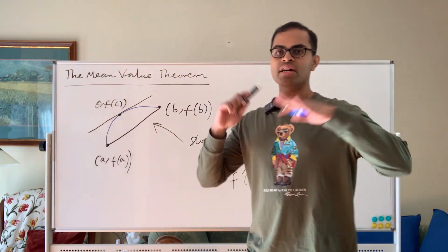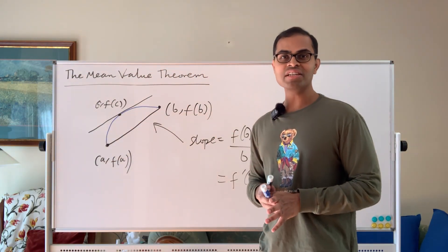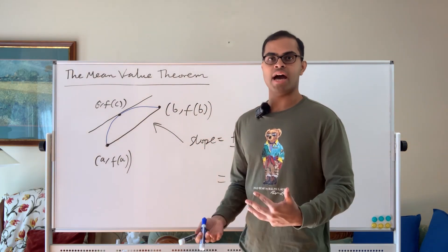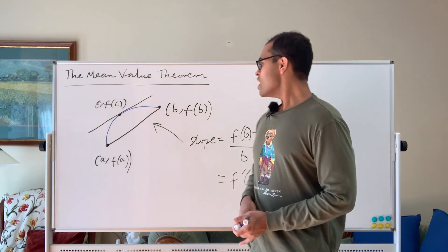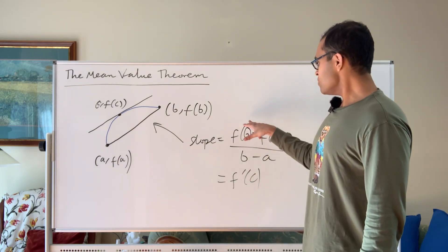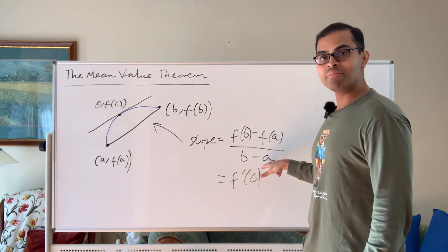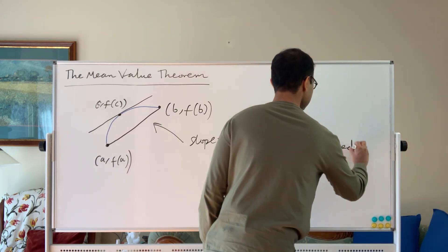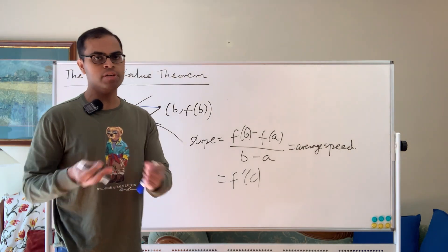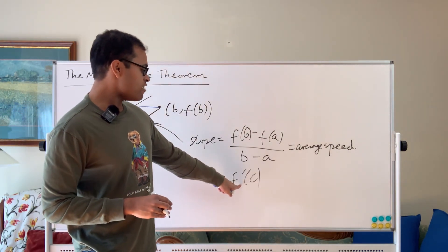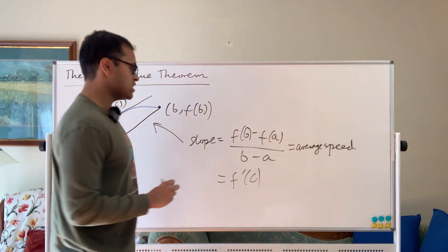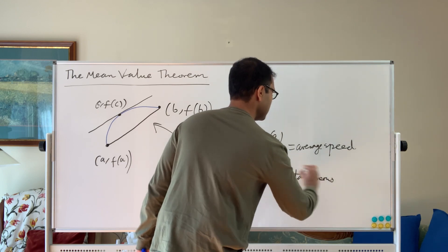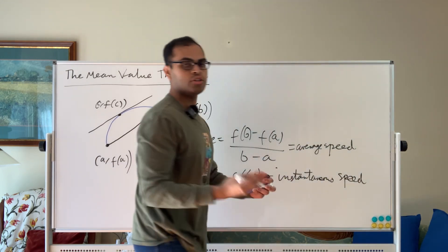Here's the physical intuition for it, which I really love — it's really simple and just makes everything so obvious. Imagine you're driving in a car, and the function is the distance you're traveling with respect to time, so it's a distance function. If you think about the slope of the secant line, this is going to be the total distance traveled divided by the total time, which is the average speed — or average velocity, if I'm being precise, because it could be negative or positive. And f'(c) is the instantaneous velocity.